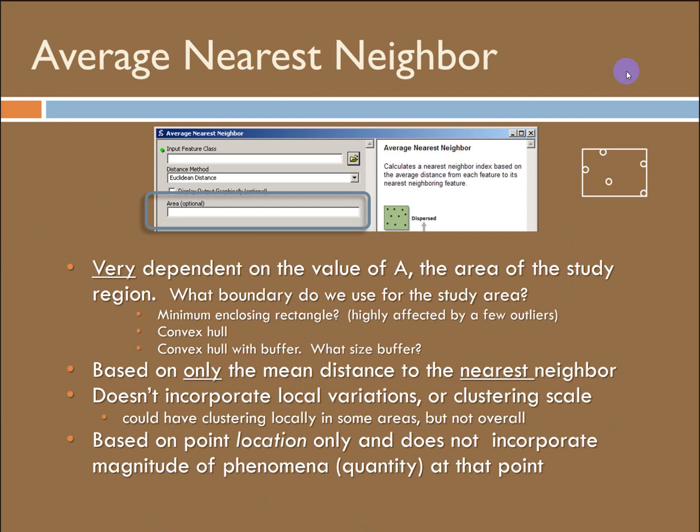Anyway, one limitation of the average nearest neighbor tool, like I just said, is that it depends on the size of the processing area. So these are just kind of a quick list of the things you need to be aware of. So ARC does give you the option to insert your own area value. Another thing that you need to be aware of is that this average nearest neighbor is just a local function. It's only based on the mean distance to the nearest neighbor of each feature. It completely ignores global patterns, which means patterns that are defined by the entire data set. Plus, it's only based on the point's location. It doesn't deal at all with any attributes or quantities associated with the location. So we're just looking at spatial patterns.